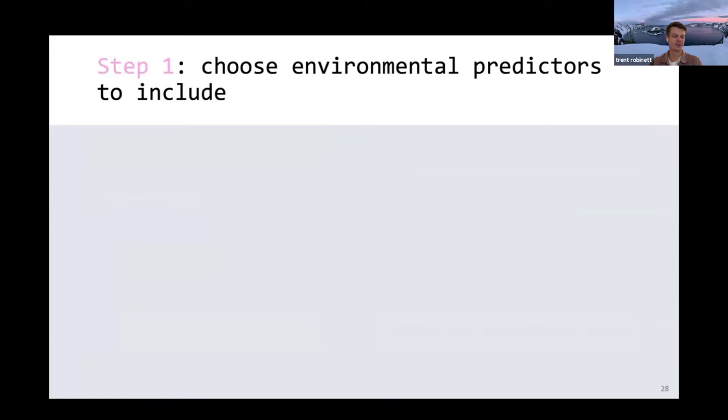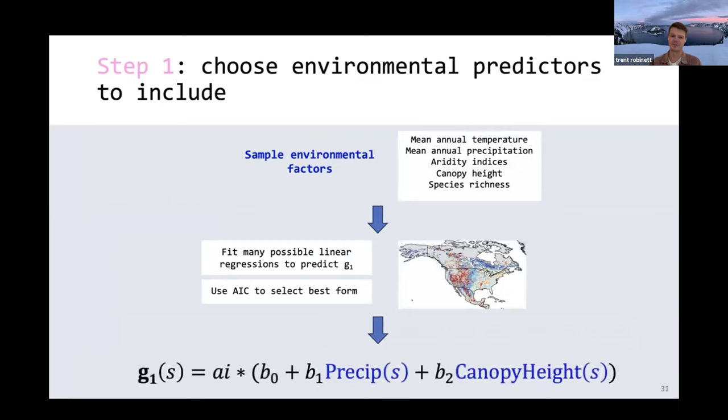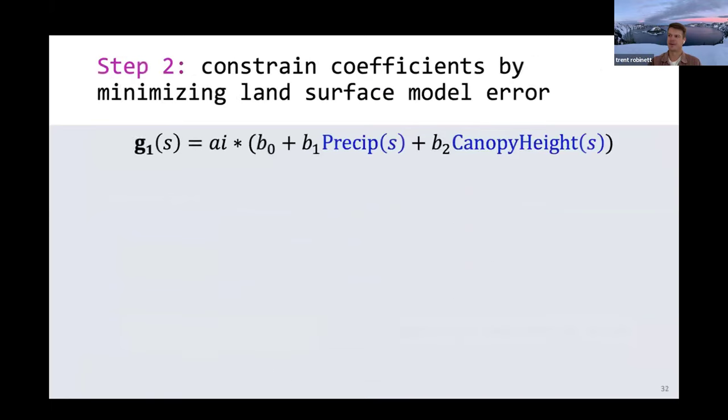Just to quickly walk through how we actually did this step one, we took a bunch of sample environmental predictors like ones that I'm showing here, and we used that global estimate of g1 map that I showed earlier to fit a bunch of possible combinations of the linear equation, and then used AIC to select the best form of this linear equation. And what we ended up using was predicting g1 simply as a function of mean annual precipitation at a location and canopy height at a location.